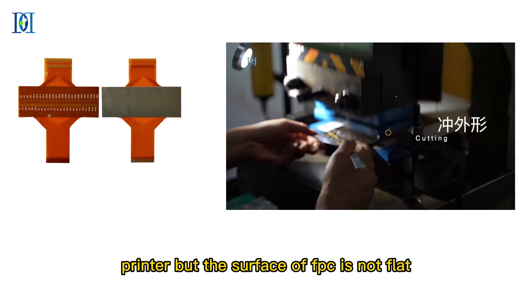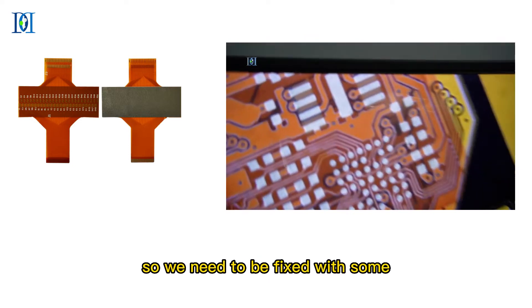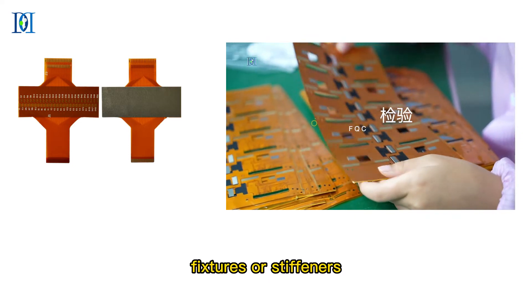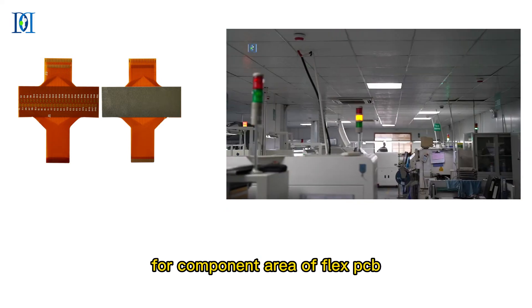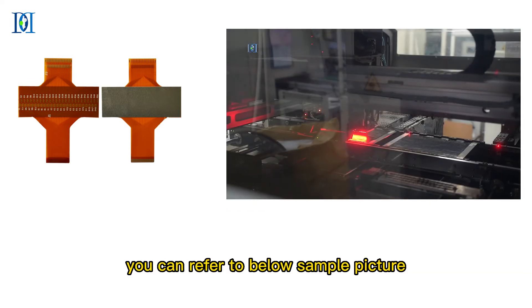But the surface of FPC is not flat, so we need to fix it with some fixtures or stiffeners. Normally we will stick stiffener for the component area of flex PCB. You can refer to the sample picture below.